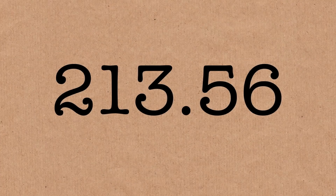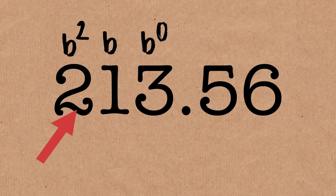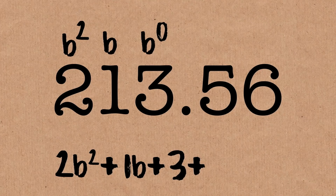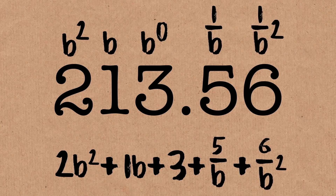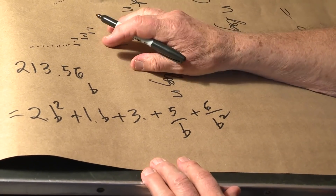Let's look at a number, say 2.356. Suppose that's a, and we write that in base b. What that means is: this is the ones digit, this is the b's digit, this is the b-squared digit. So this is 2 times b squared, plus 1 times b, plus 3 times b to the nought — the ones digit, so we get 3 — plus 5 over b, plus 6 over b squared.